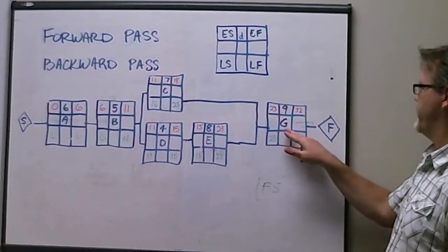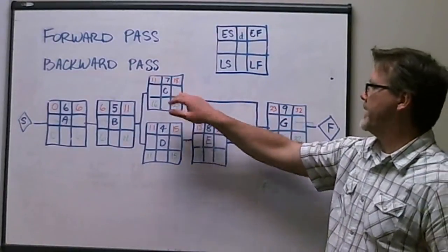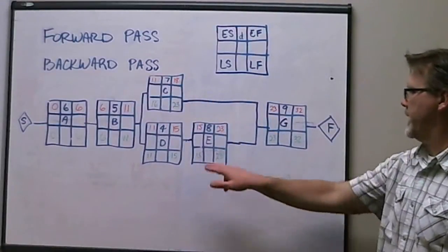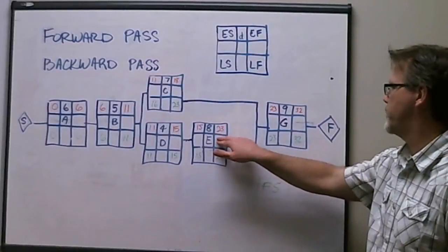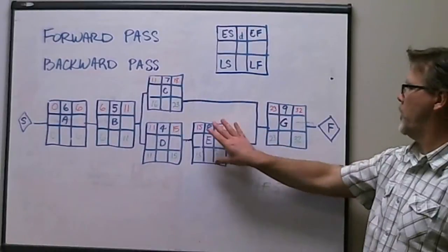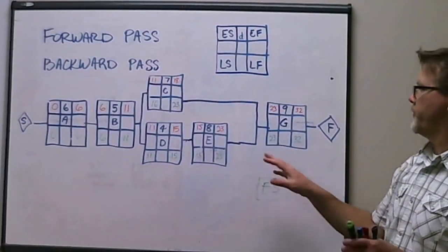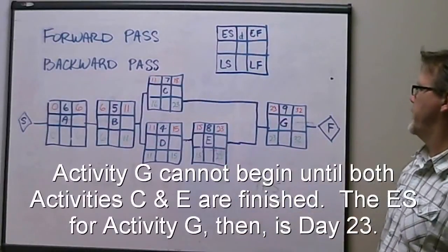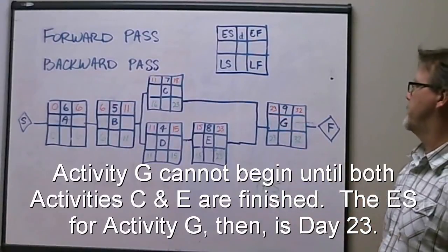And then we move to activity G. Now, the little curveball here is that we have to go back to see activity C and its early finish completion date, which is 18. We also look at activity E and its early finish completion date, which is 23. Well, we know that G cannot start until both of these activities are fully complete. And they're fully complete when activity E is done on day 23. So what we do is we show activity G with an early start date of 23.